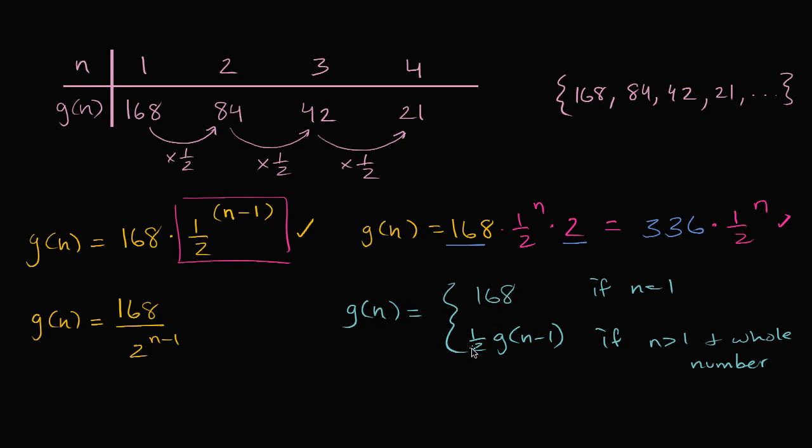g of two is gonna be 1 half times g of one, which is, of course, 168, so 168 times 1 half is 84. g of three is gonna be 1 half times g of two, which it is, so this is how we would define, this is the explicit definition of this sequence, this is a recursive function to define this sequence.